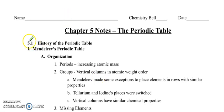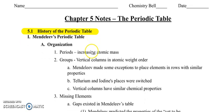So let's start with textbook chapter 5.1, History of the Periodic Table. We already watched the video in class, and now we're going to go through and look at how Mendeleev organized his table and what kind of improvements were made on it as time went on. So for Mendeleev's Periodic Table, he organized it by periods and by groups. Periods are organized going across with increasing atomic mass, and groups are vertical columns in atomic weight order.